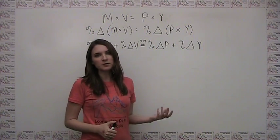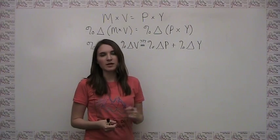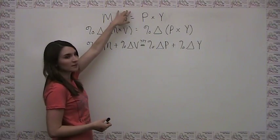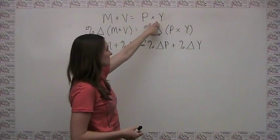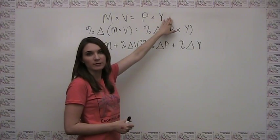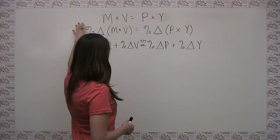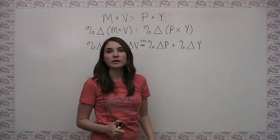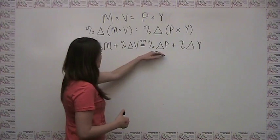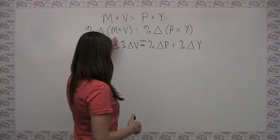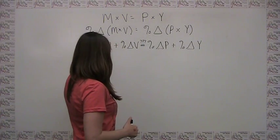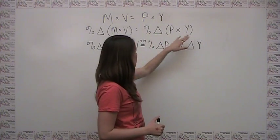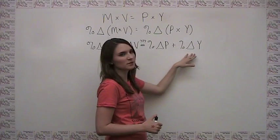A viewer asks: I'm going through the quantity theory of money video and I notice that you outline that the money supply times the velocity of money has to equal the price level times the real level of output. And you go on mathematically to say that the percent change of M times V has to equal the percent change in P times Y. And algebraically, the percent change in M times V equals the percent change in M plus the percent change in V, and the percent change in P times Y equals the percent change in P plus the percent change in Y.